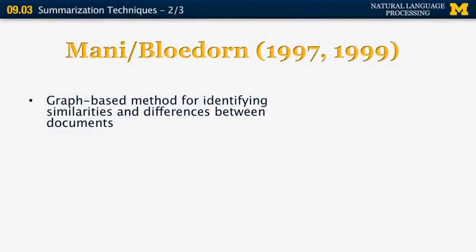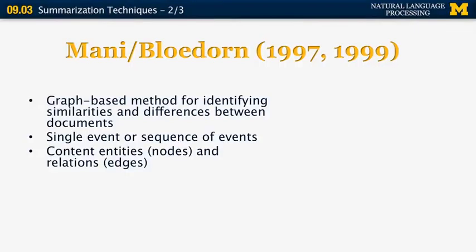We're going to continue with some more techniques from the late 90s. The next one is by Mannion and Blodorn, from Mitra 97 and 99. This was essentially the second time people looked at multi-document summarization. They also used a graph-based method for identifying similarities and differences between documents based on a single event or sequence of events.